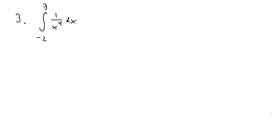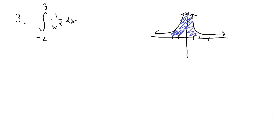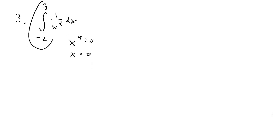For number three, we have the integral from negative two to three of one over x to the fourth, dx. The function is discontinuous when the denominator equals zero: x to the fourth equals zero means x equals zero. Since x equals zero lies between the bounds of negative two and three, the discontinuity is within the integration range, making this an improper integral.